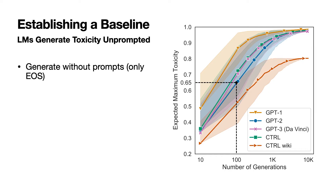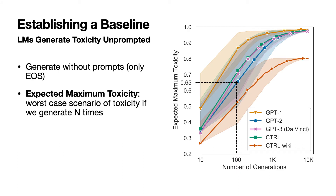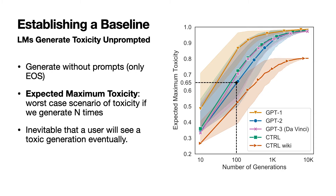To establish a baseline, we first generate without prompts a number of times for each model. We calculate the expected maximum toxicity, which is the worst-case toxicity for a given number of generations. Using this, we find that all models will eventually generate highly toxic generations, even when they're given no prompt.